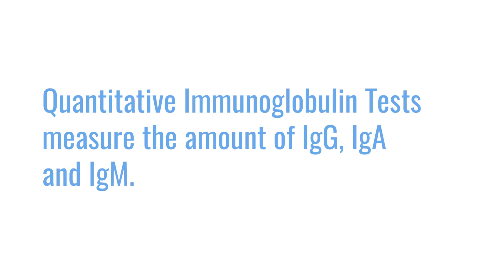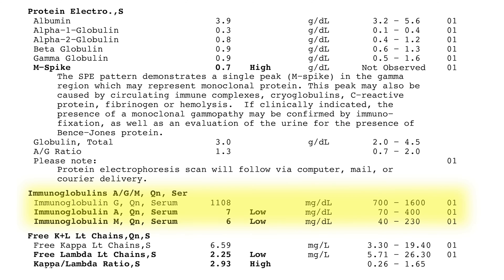So the quantitative immunoglobulin test measures IgG, IgA, and IgM — basically measuring the immunoglobulins that the body is making from plasma cells. This is important because in people who have multiple myeloma, their immune system is often compromised as a side effect of the myeloma cells themselves. We see a drop in IgA and IgM, or a drop in IgG, and those are signs that could put the patient at risk of infections.